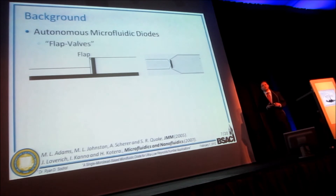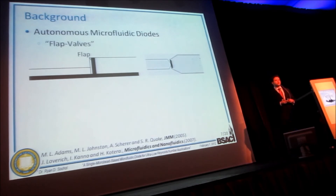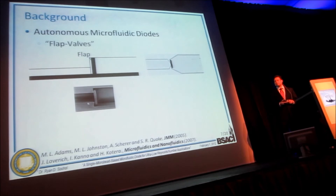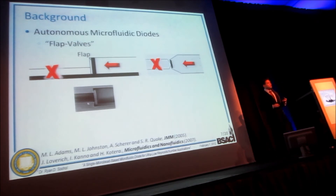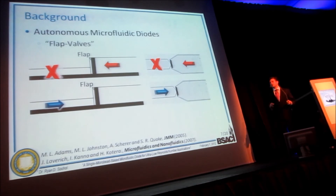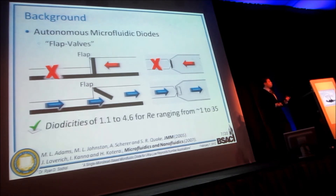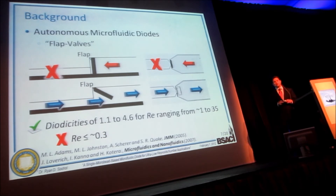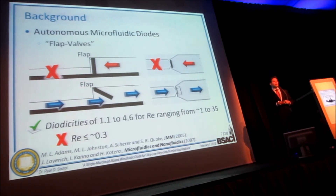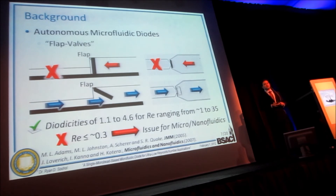To overcome this issue, researchers have developed microfluidic diodes for lower Reynolds number applications. The most popular is the microfluidic flap valve developed by Stephen Quake's lab at Stanford, where a flap hanging from the top of a channel obstructs flow in one direction while displacing to allow flow in the other. Previously, researchers have reported diodicities ranging from roughly 1.1 to 4.6 for Reynolds numbers from about 1 to 35. However, for Reynolds numbers of approximately 0.3, there simply is not enough fluidic force to displace the flap — presenting an issue for emerging applications that function at Reynolds numbers below 0.3.